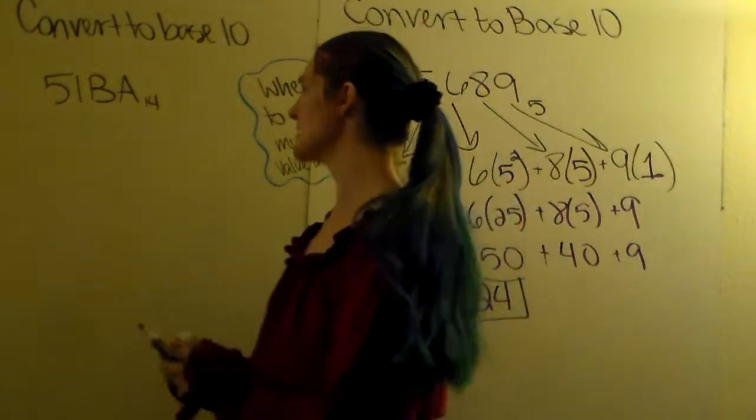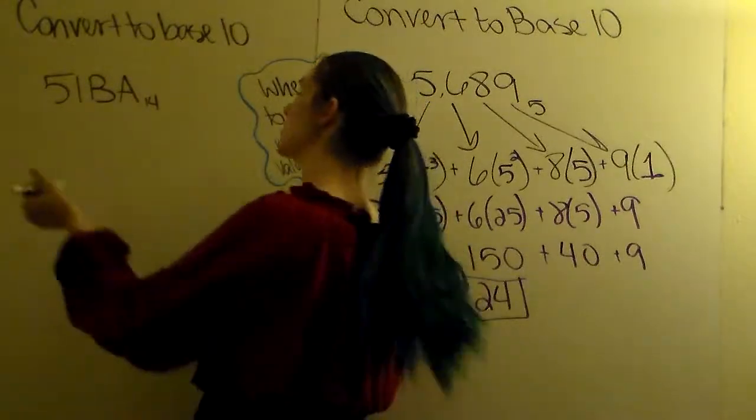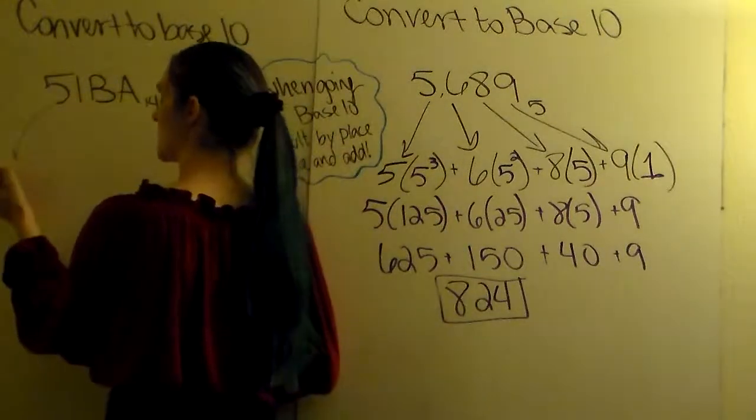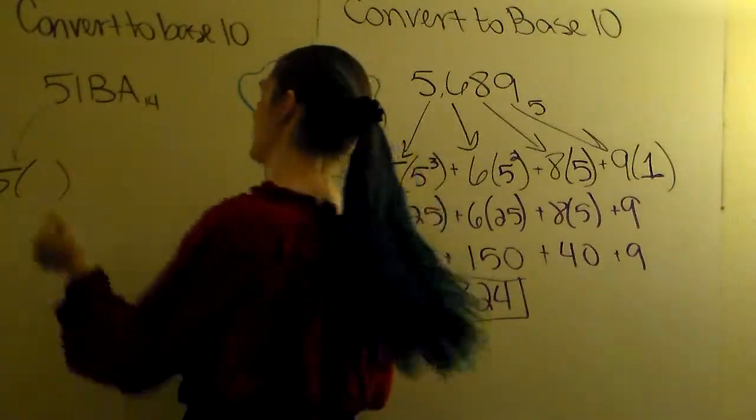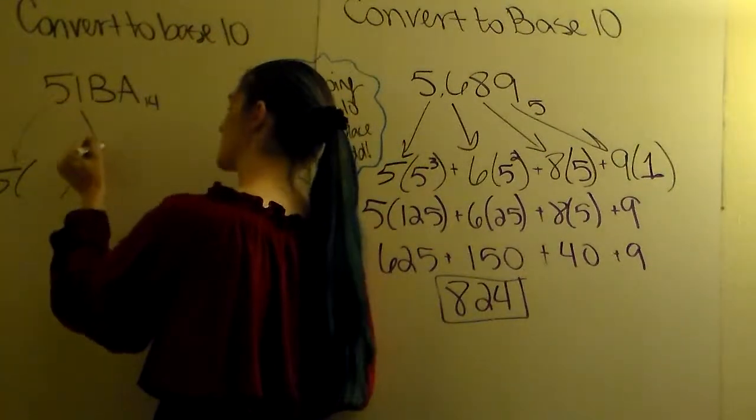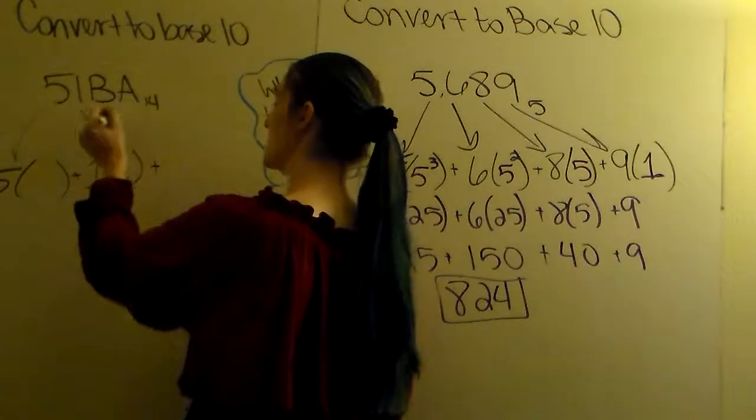So we're going to work this in a very similar way. We're still going to base 10. So we're still going to multiply by place values. We've got 5 times its place value plus 1 times its place value plus B.